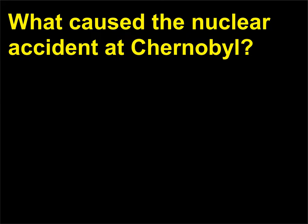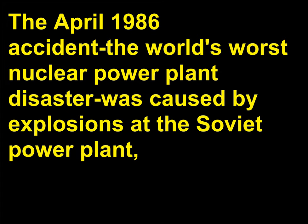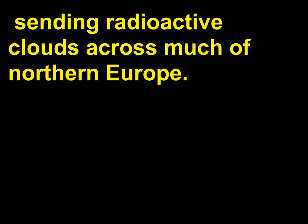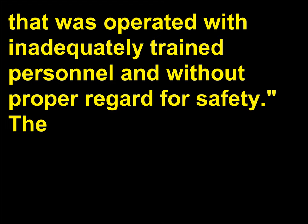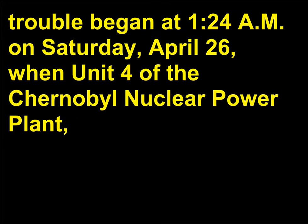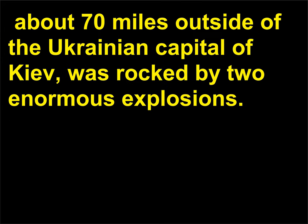What caused the nuclear accident at Chernobyl? The April 1986 accident — the world's worst nuclear power plant disaster — was caused by explosions at the Soviet power plant, sending radioactive clouds across much of Northern Europe. According to the World Nuclear Association, the accident was the result of a flawed reactor design that was operated with inadequately trained personnel and without proper regard for safety. Trouble began at 1:24 a.m. on Saturday, April 26th, when Unit 4 of the Chernobyl nuclear power plant, about 70 miles outside of the Ukrainian capital of Kiev, was rocked by two enormous explosions.